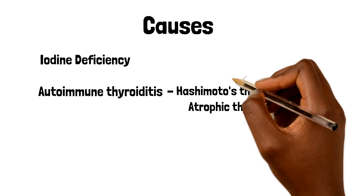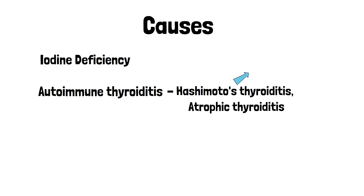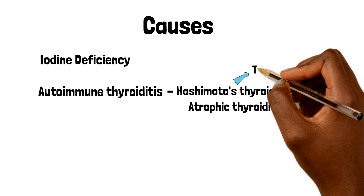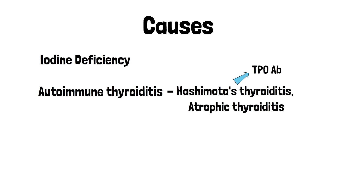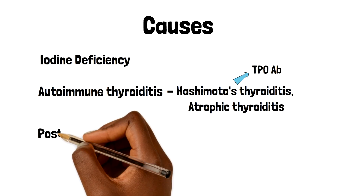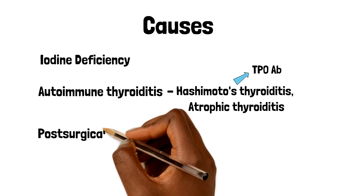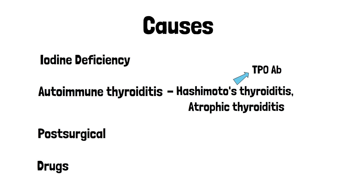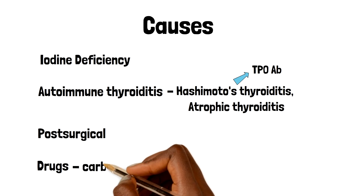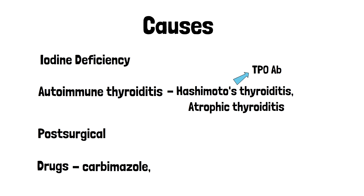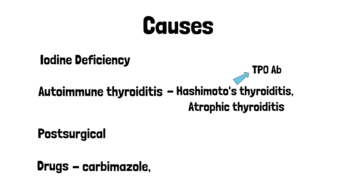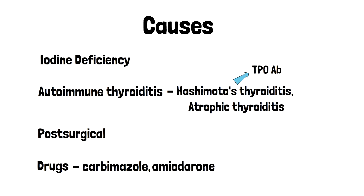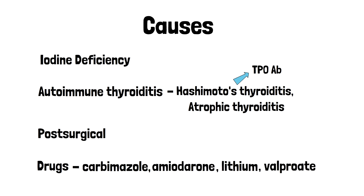With autoimmune hypothyroidism, we can consider checking TPO antibodies if there's a clinical suspicion. We also have certain cases seen post-surgery or following an ablation, as well as drug-induced hypothyroidism, including patients treated with carbimazole for hyperthyroidism, and side effects from drugs such as amiodarone, lithium, and valproate.